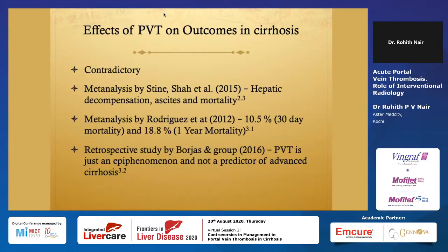The meta-analysis by Stein looked at close to about three studies with 2,436 patients, which showed significant mortality. Roderick looked at transplant patients — approximately 25,000 patients — showing 10.5% mortality and 80.8% one-year mortality for patients with PVT. A recent but small study of about 170 patients contradictively said PVT is just an epiphenomenon and not a predictor of advanced cirrhosis, though that study had many critics due to the small number of patients.